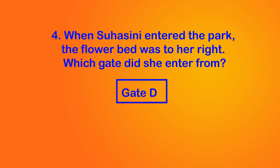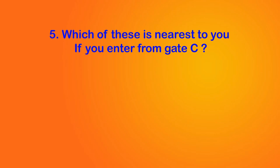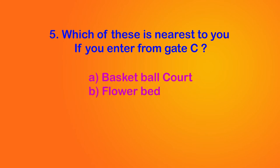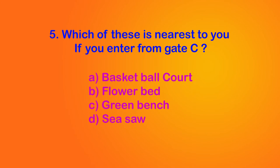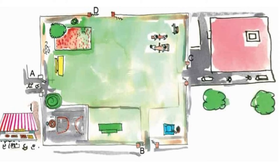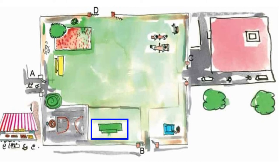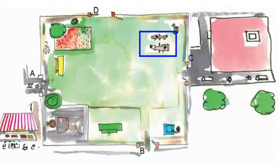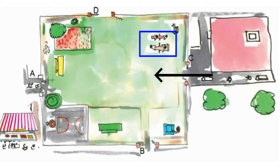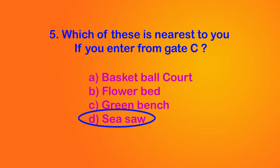Now let's come to the final question: which of these is nearest to you if you enter from gate C? The given options are option A — basketball court, option B — flower bed, option C — green bench, and option D — seesaw. Let's find all the given options in the picture. If we enter from gate C, clearly the seesaw will be nearest to us. Therefore, option D, seesaw, is the correct answer.